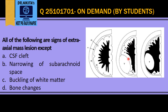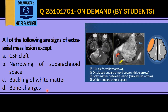Now, since this extraaxial mass is in close contact with the bone, it can cause bone changes also. This is an extraaxial mass lesion in the right CP angle. You see the CSF cleft, the grey matter buckling, and the vessels between the mass and the brain. So that is an extraaxial mass lesion.